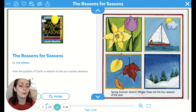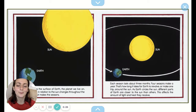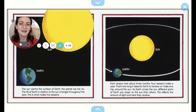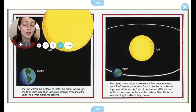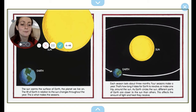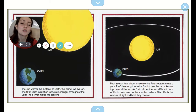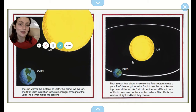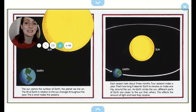Spring, summer, autumn, winter. These are the four seasons of the year. The sun warms the surface of earth, the planet we live on. The tilt of earth in relation to the sun changes throughout the year — this is what makes the seasons. Each season lasts about three months, and four seasons make a year. That's how long it takes for earth to revolve, or make one trip around the sun. As earth circles the sun, different parts of earth are closer to the sun than others. This affects the amount of light and heat they receive.